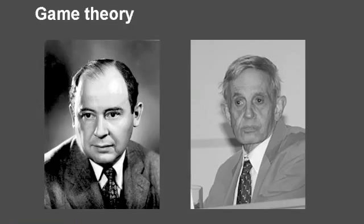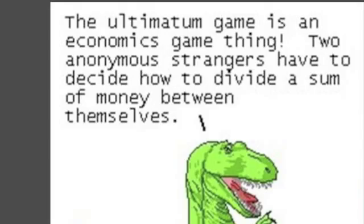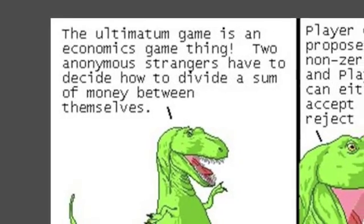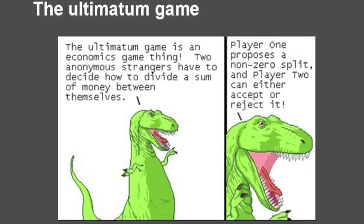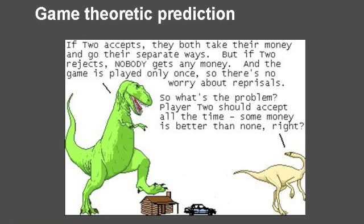One of the most well-studied games in game theory is the ultimatum game. In this game, two strangers are paired up and given a sum of money. One of them, let's call her the proposer, has to decide how to divide up the money between the two. She might suggest a 50-50 split, or she might be mean and offer only 10% to the other person. The other player, let's call him the responder, can either accept this offer or reject it. If he accepts it, each player walks away with their share of the money. If he rejects the offer, each player walks away with nothing.